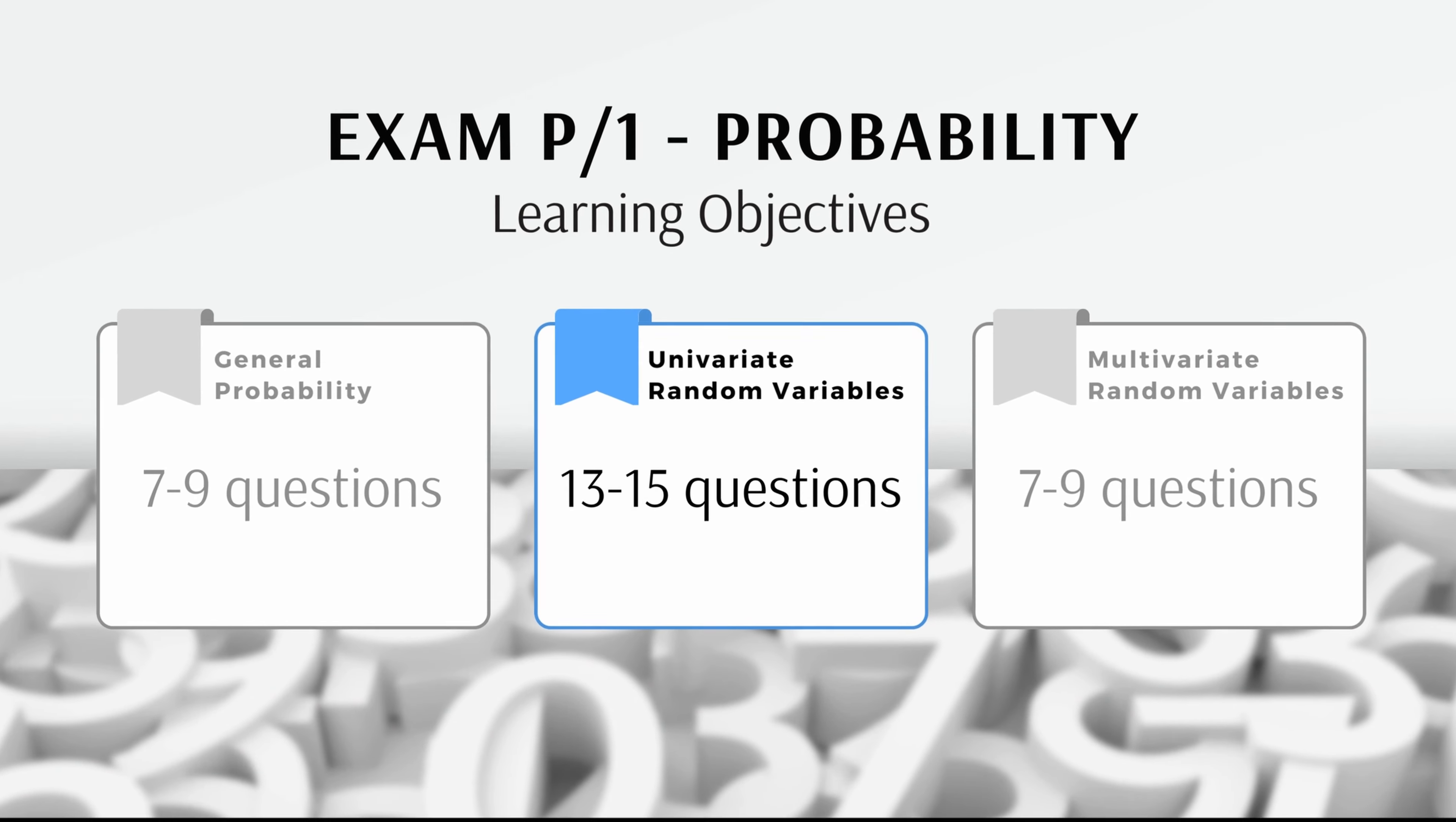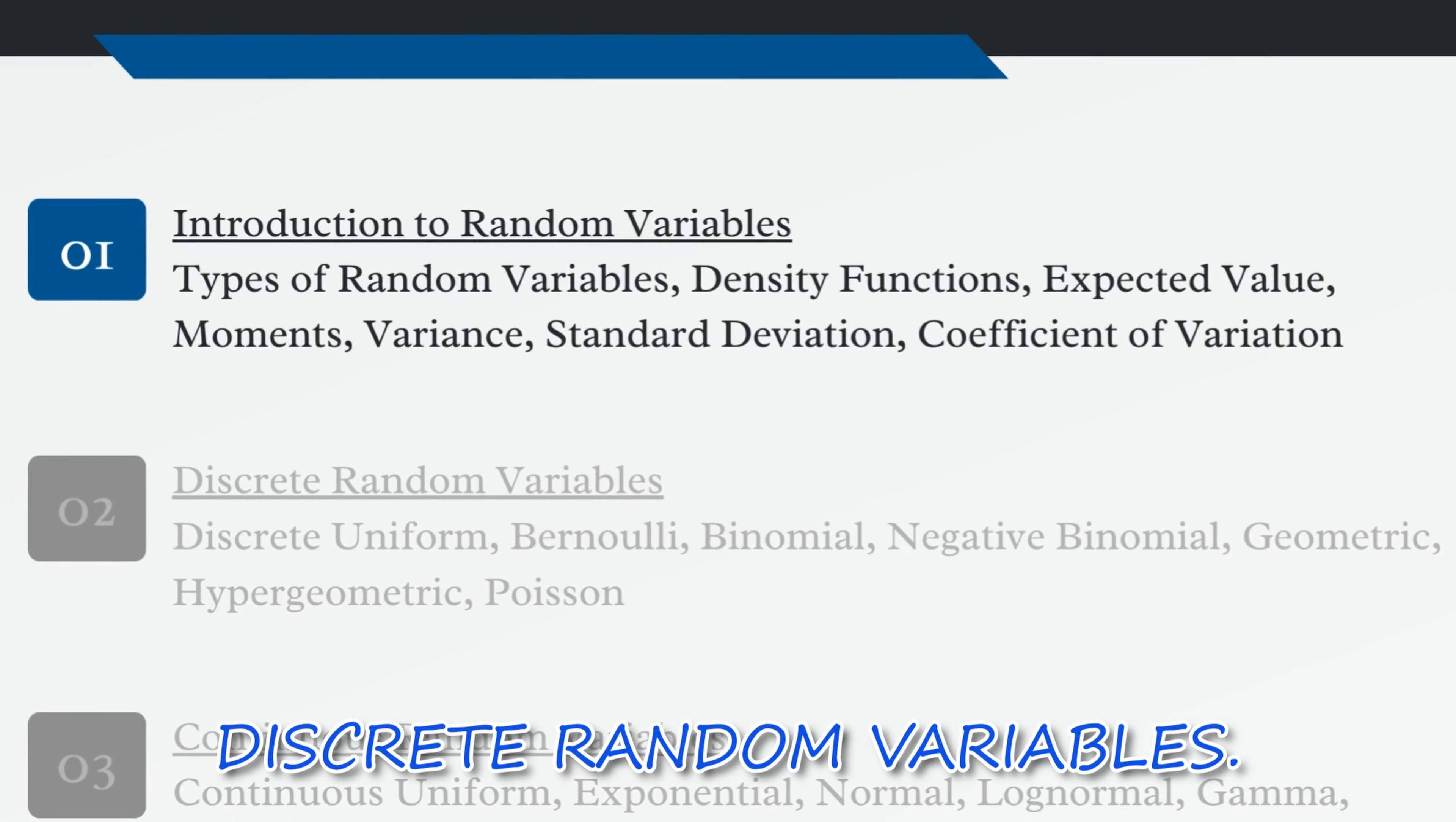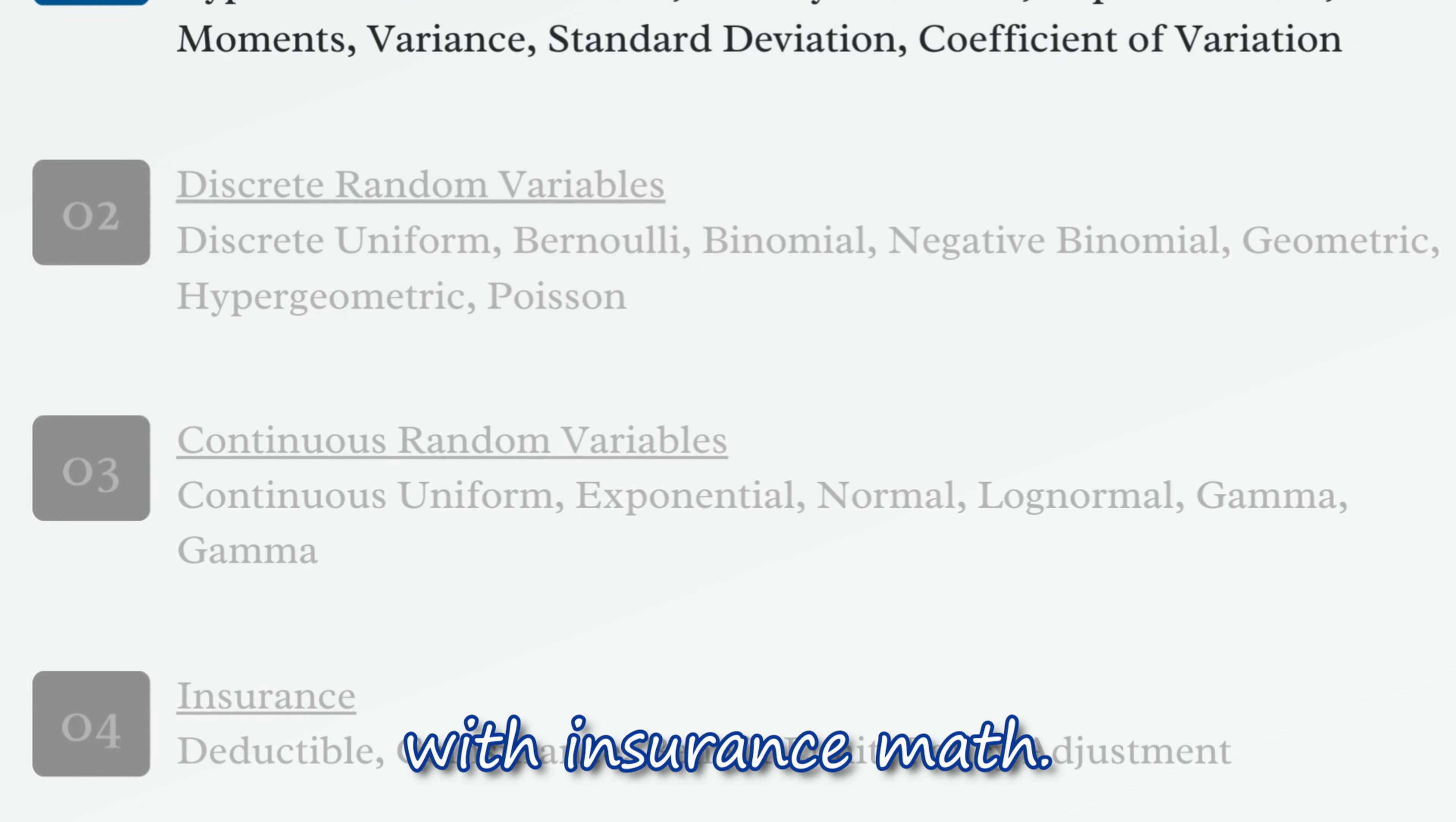Because univariate random variables are such a large part of the syllabus, we're going to break this section down into several videos. In this video, we'll cover the core principles around discrete random variables. In the next video, we'll cover the 7 types of discrete random variables tested on the exam. We'll then extend the concepts in this video to continuous random variables and finish off this section with insurance math.